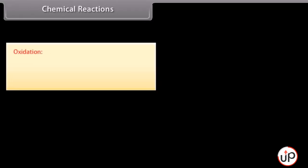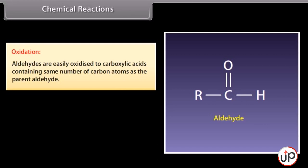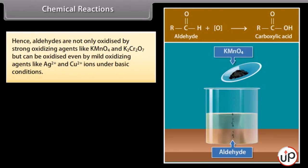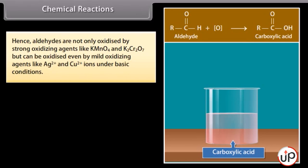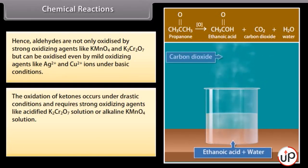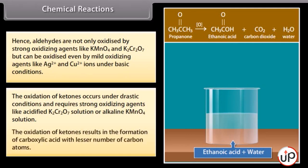Oxidation: aldehydes are easily oxidized to carboxylic acids containing the same number of carbon atoms as the parent aldehyde. Aldehydes are easily oxidized because of the presence of a hydrogen atom on the carbonyl group which gets converted to an OH group without cleavage of any bond. Hence, aldehydes are oxidized not only by strong oxidizing agents like potassium permanganate and potassium dichromate, but can be oxidized even by mild oxidizing agents like Ag+ and Cu2+ ions under basic conditions. The oxidation of ketones occurs under drastic conditions with strong oxidizing agents like acidified potassium dichromate or alkaline potassium permanganate, resulting in carboxylic acids with fewer carbon atoms.